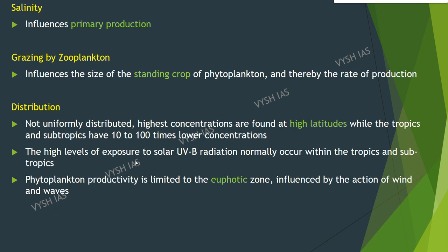Apart from temperature, salinity, and nutrients, high levels of exposure to solar UVB radiation that normally occur within the tropics and subtropics also influence phytoplankton distribution. Phytoplankton productivity is limited to the euphotic zone — the upper layer of the water column where there is sufficient sunlight for photosynthesis. The position of the organisms in this zone is influenced by the action of wind and waves.